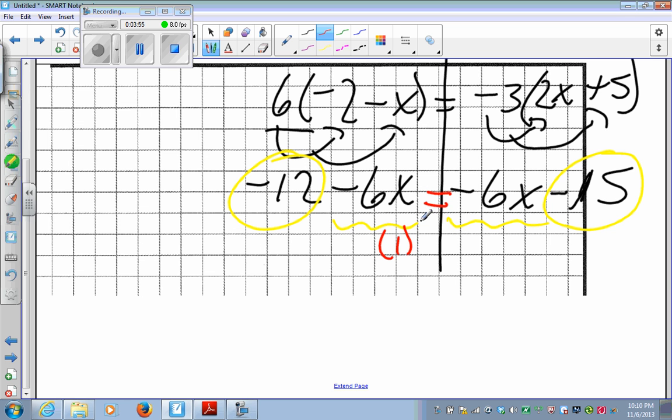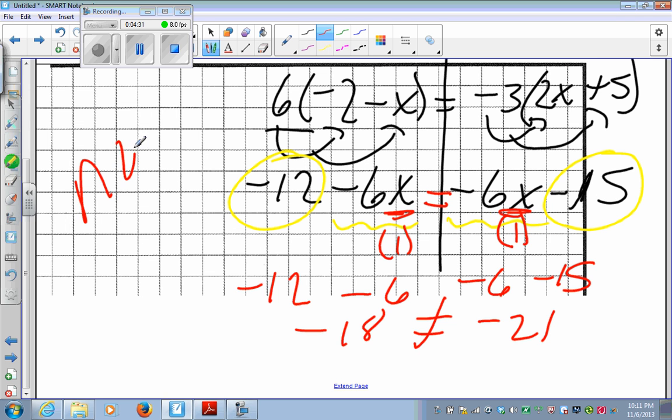So negative 6 times 1 is a negative 6. Negative 12 minus 6 is a negative 18. So if I put the same number in over here, negative 6 times 1 is a negative 6. Negative 6 minus 15 is a negative 21. 18 and negative 21 is not the same. I could put numbers in this equation all day long. So the answer to this one is no solution. That means there is no number on the planet that will work in this equation.